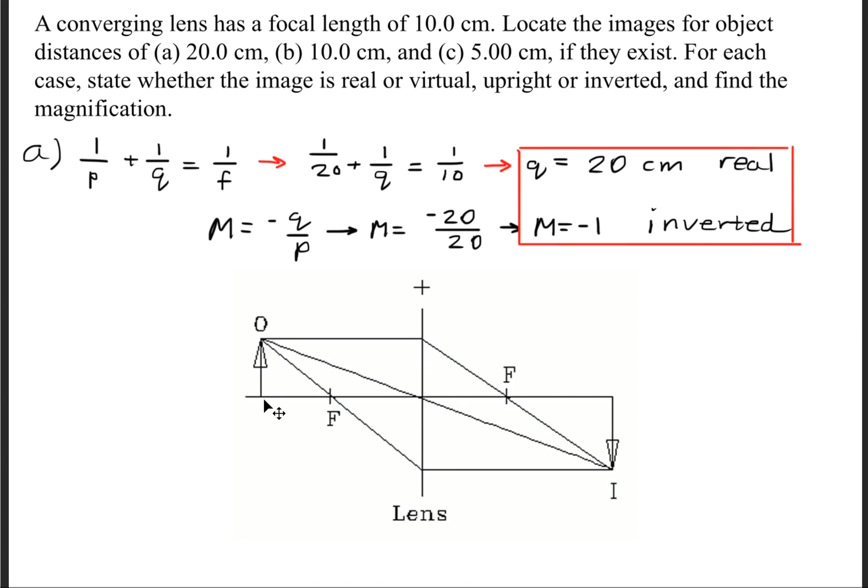The object will be over here, and we have our rays going through the focal point, through the radius, and coming in parallel. And when they intersect, it forms the image on the opposite side. This is a real image, but as you can see, it's also inverted.